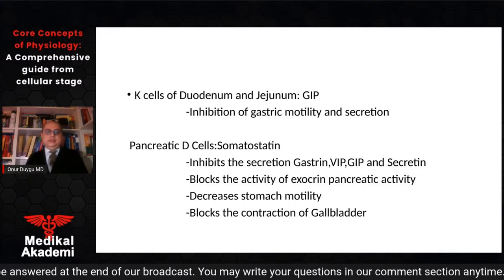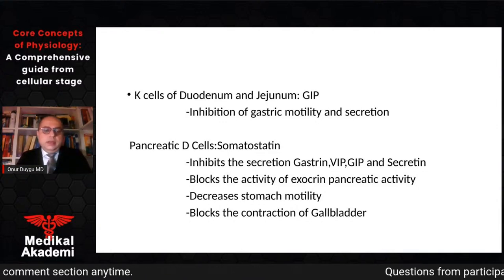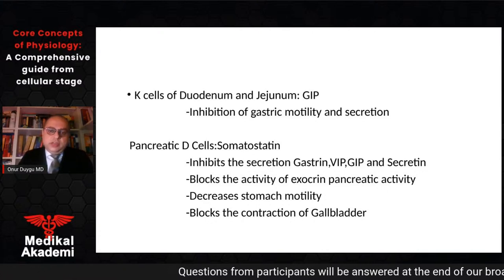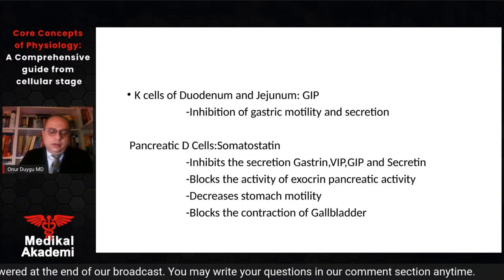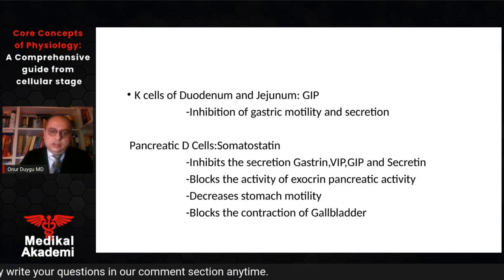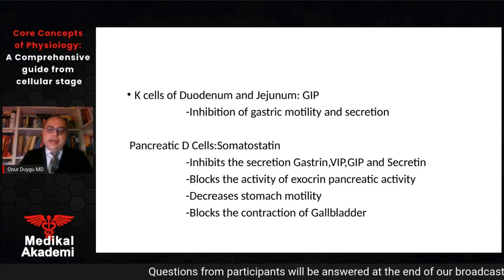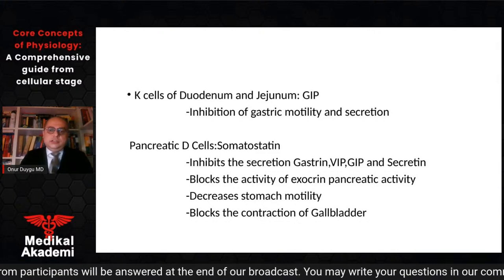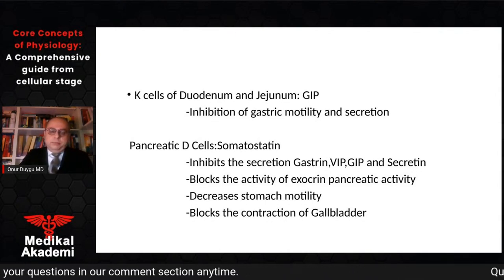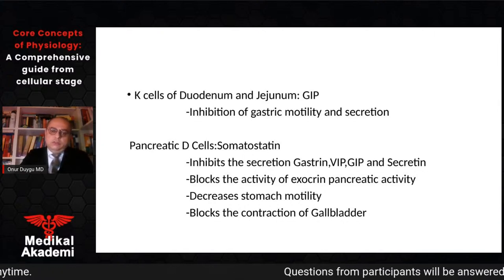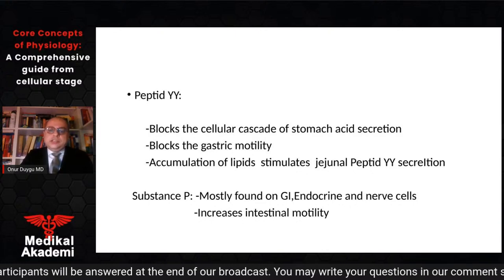For the pancreatic hormonal system, D cells located in the pancreas are the main secretors of somatostatin. Somatostatin inhibits the secretion of gastrin, VIP, GIP, and secretin. Additionally, it blocks exocrine pancreatic activity, decreases stomach motility, and blocks contraction of the gallbladder — an important point for board exams regarding gallbladder activity. Peptide YY blocks the cellular cascade of stomach acid secretion, interrupts stomach acid secretion, and blocks gastric motility.